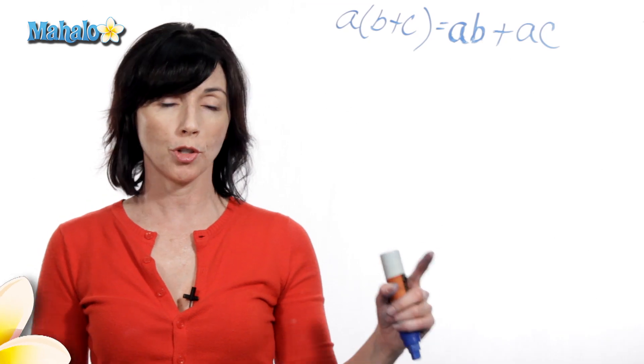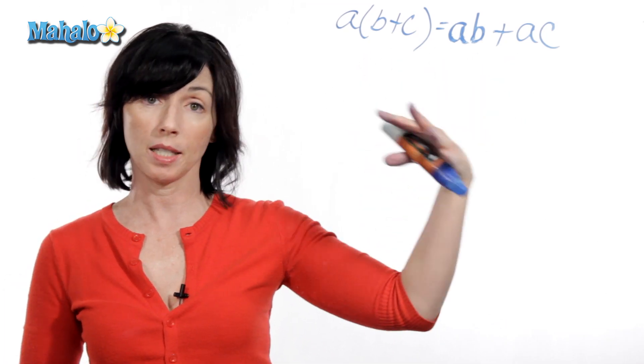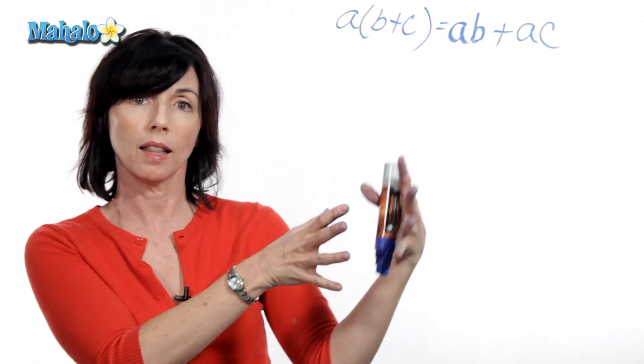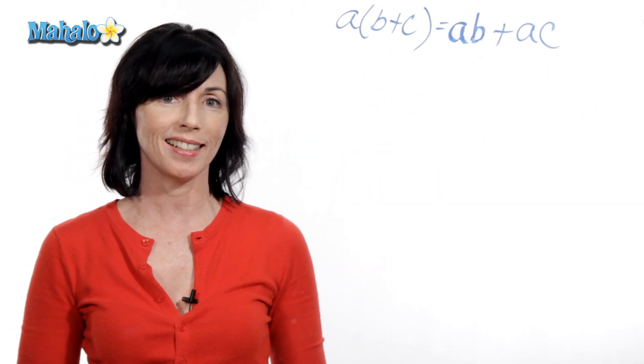Now, you can use the distributive property in this direction, expanding out. But you can also go this direction, taking something that's expanded and collapsing it down. So let's look at an example.